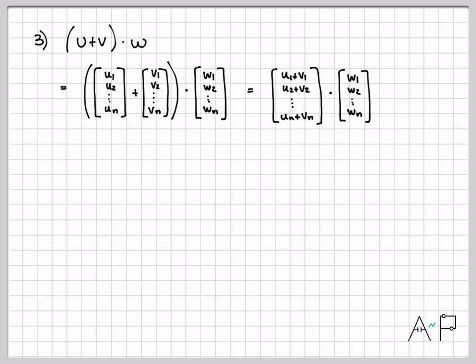Now we can apply our definition of the dot product and just multiply coordinate by coordinate. So that's u1 plus v1 quantity times w1 plus the quantity u2 plus v2 times w2 all the way down. Now let's just go ahead and use normal distributive property of multiplication. So that's u1w1 plus v1w1, and then we'll distribute that as u2w2 plus v2w2 all the way down.